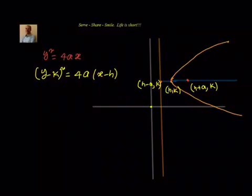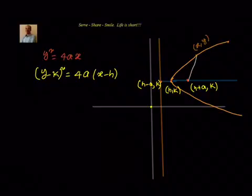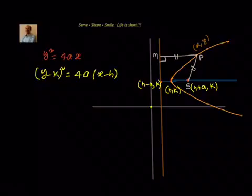Now, how to solve this? We will take an arbitrary point (x, y). According to the definition of a parabola, the distance from this point to the focus should equal the distance to the directrix. Let us call the point P and the foot of the perpendicular M, with focus S. We know that SP = PM.